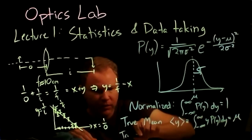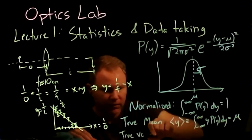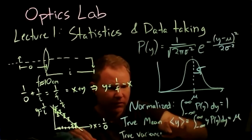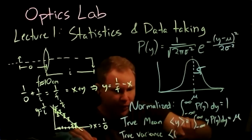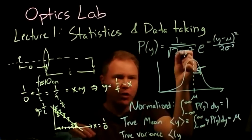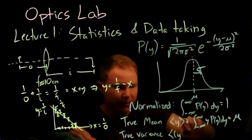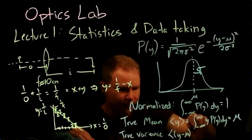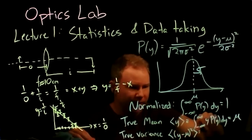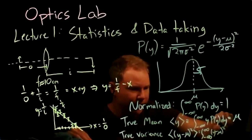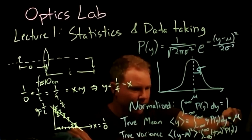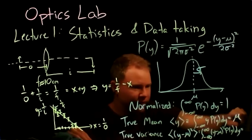The true variance is defined as the average of the squared distance between draws of this distribution and the mean: ∫(−∞ to ∞) (y − μ)² · P(y) dy. This gives you σ². So σ² is the true variance and σ is the true standard deviation.